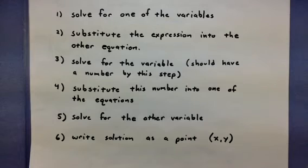Now this will create a new equation that only has one type of variable. Once we have that, we'll solve for that variable, and at this step we'll actually have a number.